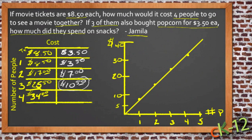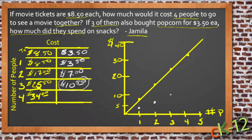We can use that same graph and plot the other information on it as well, using a white line. If one person buys a $3.50 popcorn, that's a white point right about here. Two people buying popcorn is $7, so another point here. Three people buying popcorn is $10.50, just above 10, and so on. Drawing a line through these points shows the slope that represents the cost of popcorn going up by the number of people.